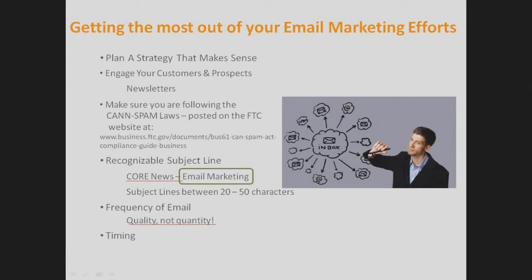Timing is everything in email marketing. For business emails, the best time to send is Tuesday through Thursday from 9:30 a.m. to 3 p.m. Weekends are bad because business owners aren't there, and emails sent over the weekend get pushed to the bottom of the inbox. Monday is usually meeting day and put-out-fires day, so business owners are often skimming emails rather than reading them. Afternoons after 3 p.m., people are getting ready to leave.